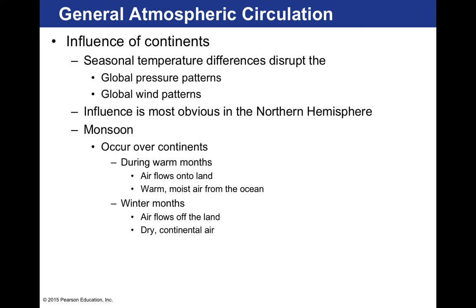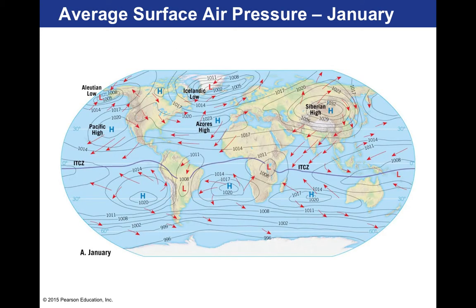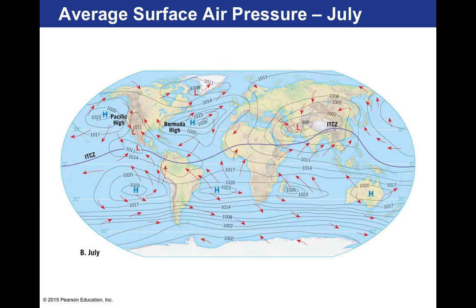Continents influence atmospheric circulation through seasonal temperature differences that disrupt global pressure and wind patterns. This influence is most obvious in the northern hemisphere, where most land masses exist. A monsoon season occurs over certain continents: during warm months, air flows onto land bringing warm moist ocean air; in winter months, dry continental air flows off the land. Certain areas experience very warm, wet months and very cool, dry months with almost no precipitation. Maps of average surface air pressure in January versus summer show that highs change location and certain places are in persistent low pressure zones during summer.